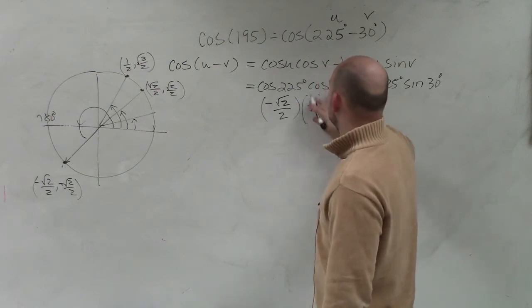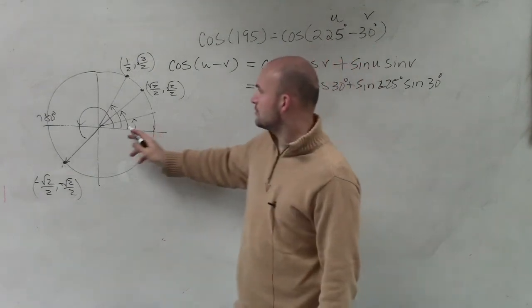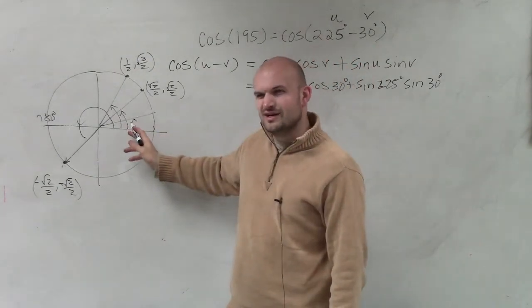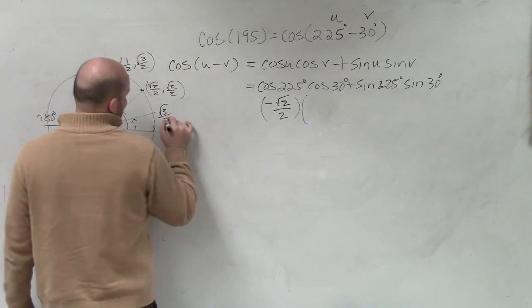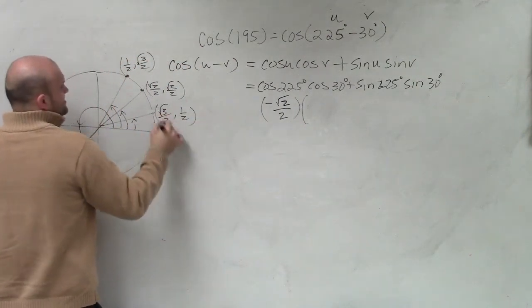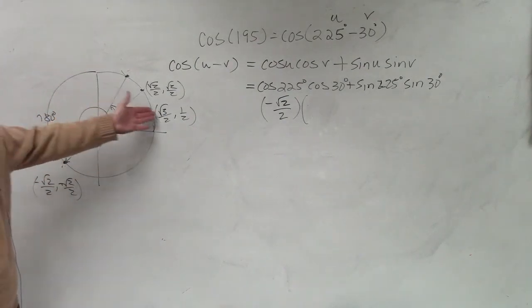Wait. No. 30 degrees. Square root of 3. Square root of 3. 30 degrees. 30 degrees is right here, right? Not 60 degrees. 30, 45, 60. I don't know. I'm sorry. What am I doing? That's obviously 30 degrees. That's obviously 60 degrees. There's your point.